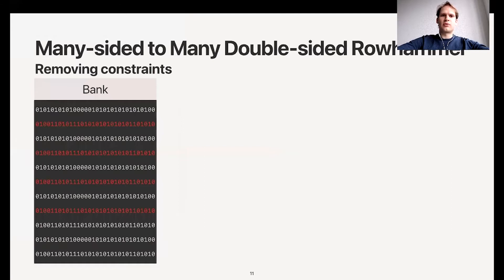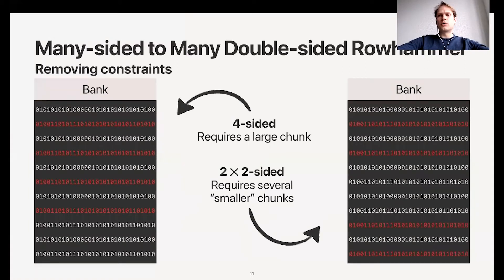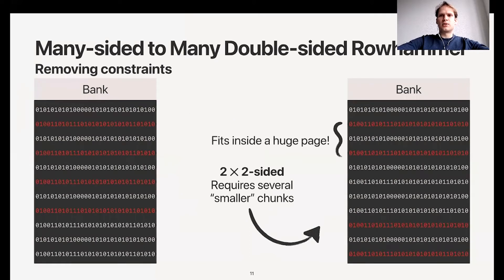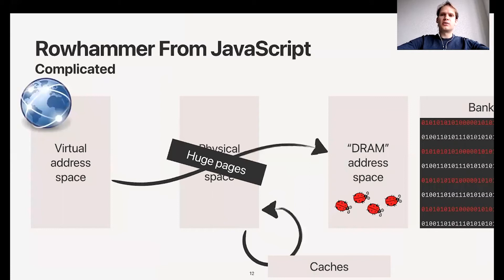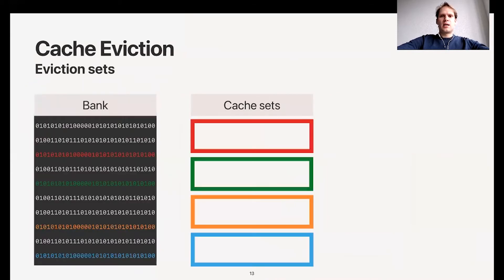Our first observation is that these complicated four-sided patterns that require a large chunk of physical memory can actually be decomposed into smaller patterns. A large four-sided pattern can be decomposed into two double-sided patterns. This is great because each of these smaller double-sided patterns fits inside a huge page. If we have two huge pages, we can create this pattern on the right hand side which also bypasses the mitigation. We use huge pages to cut through these abstractions.